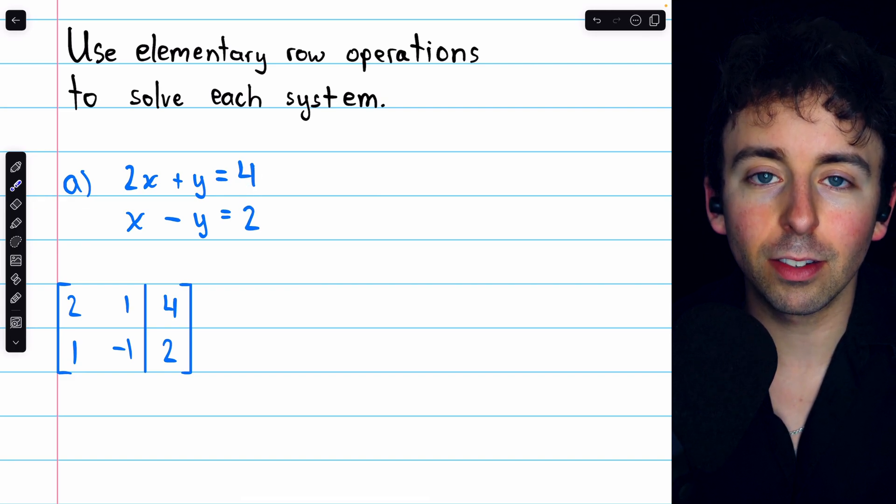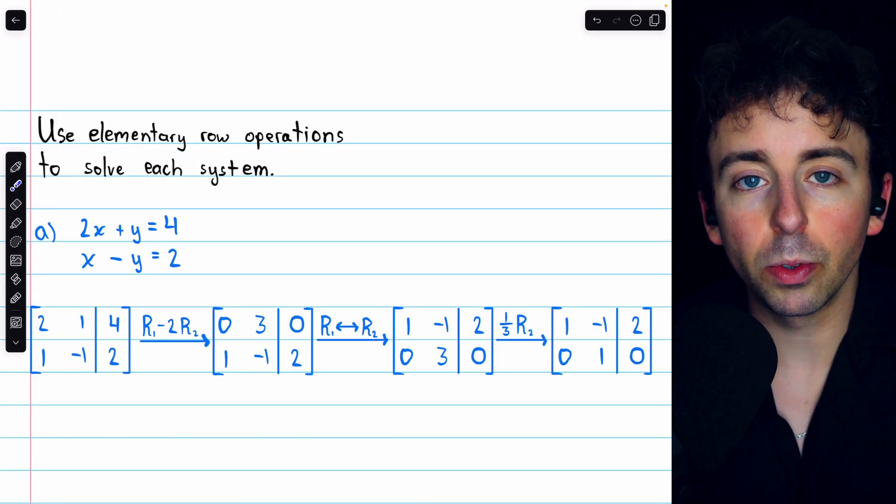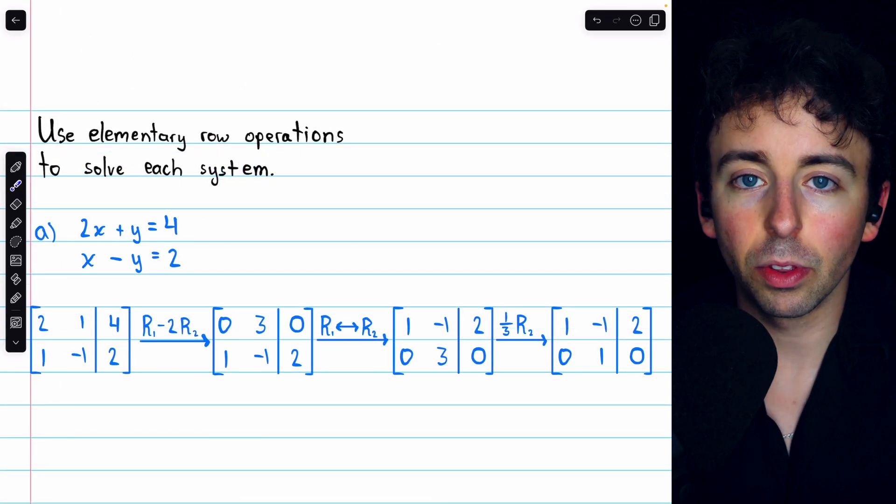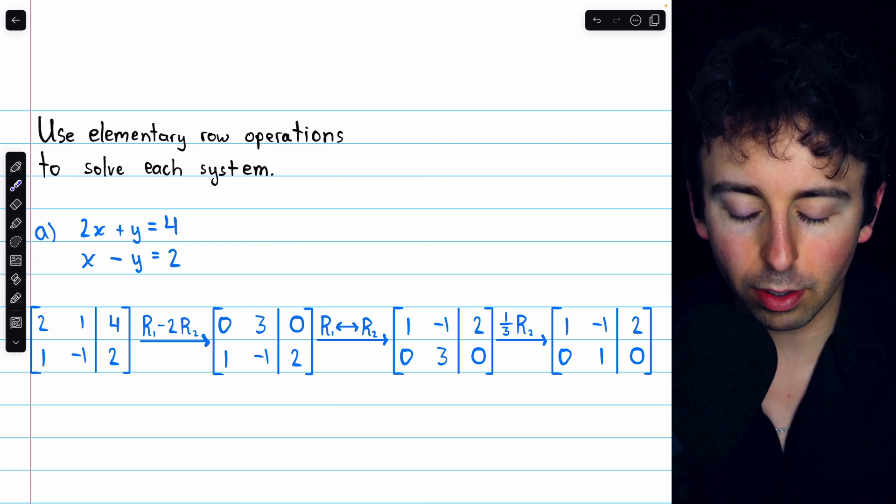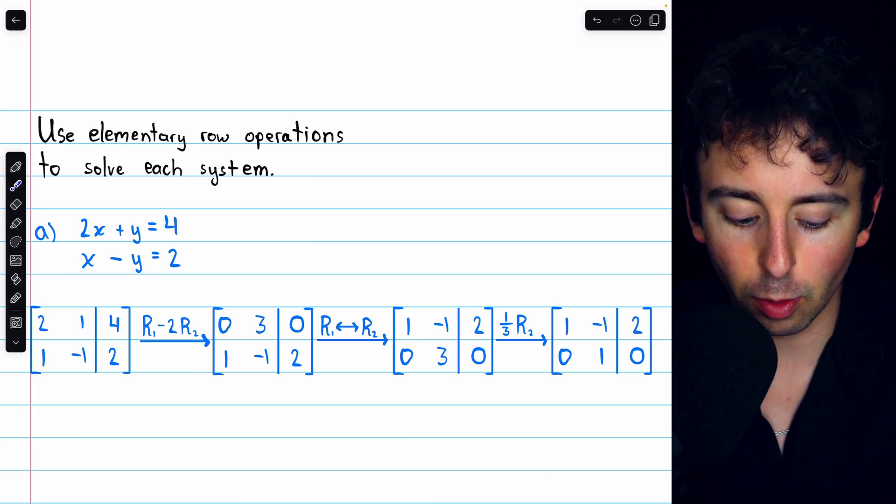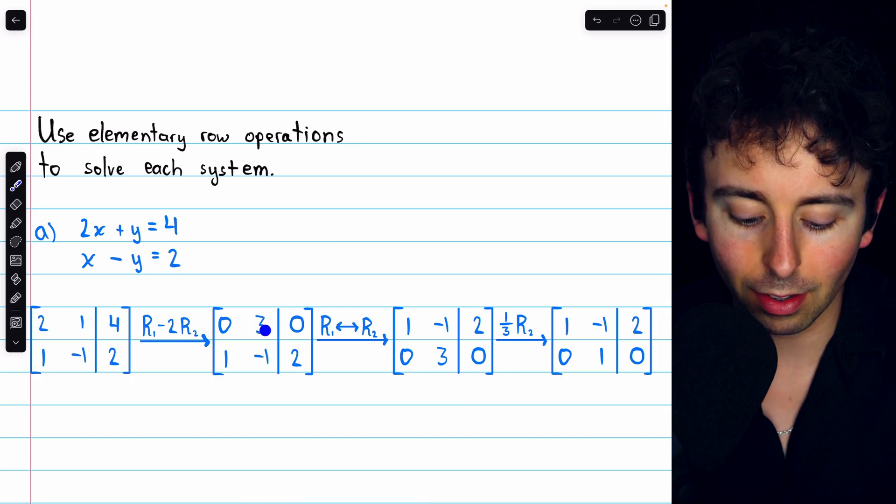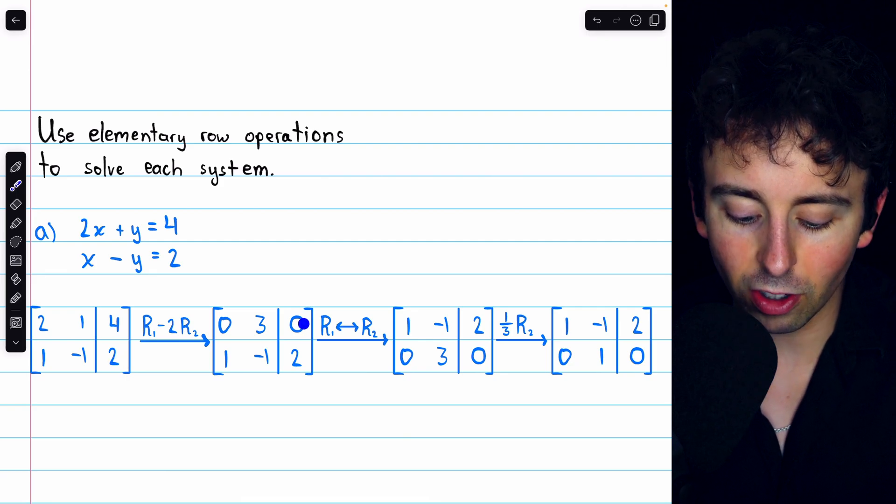Now, we'll perform elementary row operations to reduce this matrix. We could try to use row 1 to eliminate row 2, but then we would have to deal with fractions, so it'll be a little easier to subtract two copies of row 2 from row 1. Thus, we have 2 minus 2 times 1, which is 0. 1 minus 2 times negative 1, which is 1 plus 2, which is 3. And 4 minus 2 times 2, which is 0.